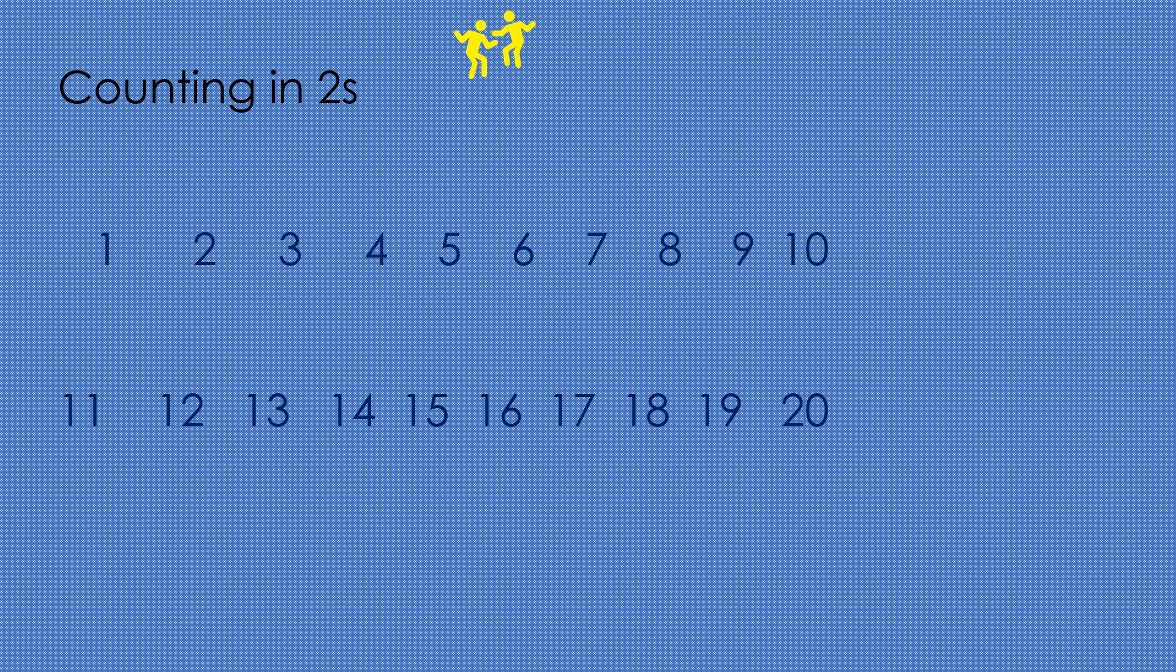Counting in twos from zero. It's easy to do this if you skip count. So, start from zero and skip the number 1, straight to 2. Skip 3 and straight to number 4, and so on. You can do some skip jumping actions for this. Are you ready?